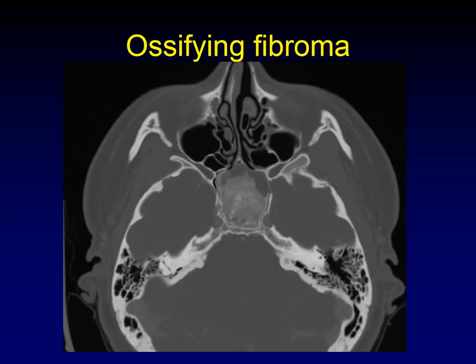Now let's talk about other diseases that can mimic fibrous dysplasia. Ossifying fibroma famously mimics fibrous dysplasia both radiologically and histopathologically — for a long time it was almost impossible for the pathologist to distinguish these two lesions, and the H&E can be identical. The key difference is that ossifying fibroma is a rounded mass filling the sinus that does not have the configuration of the underlying bone, whereas fibrous dysplasia maintains that underlying configuration. Sometimes ossifying fibroma will have a characteristic radiating pattern of calcification, but you don't always get that lucky.